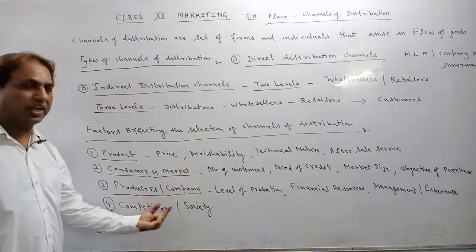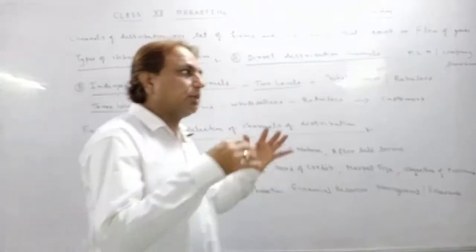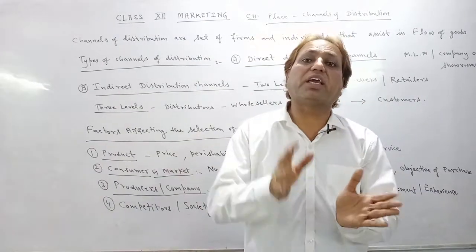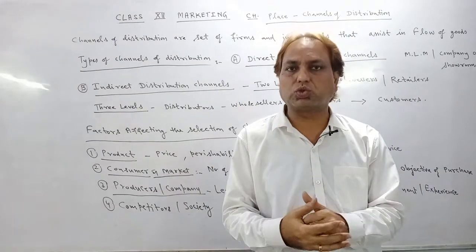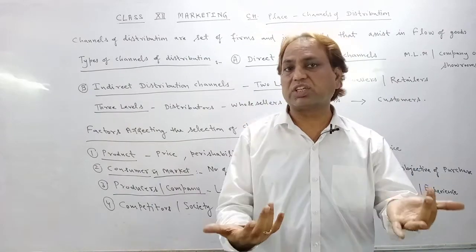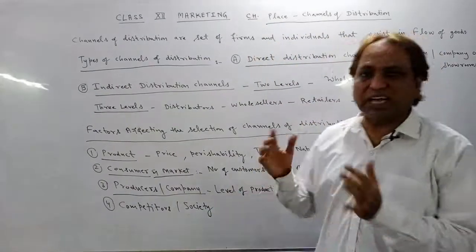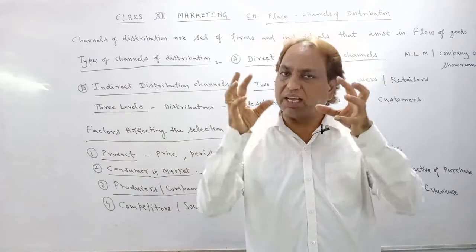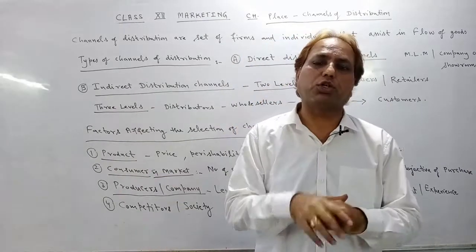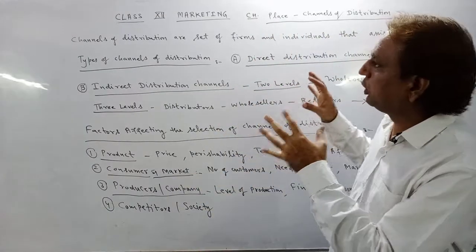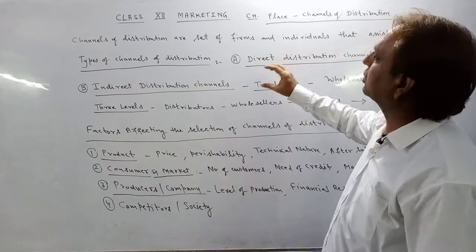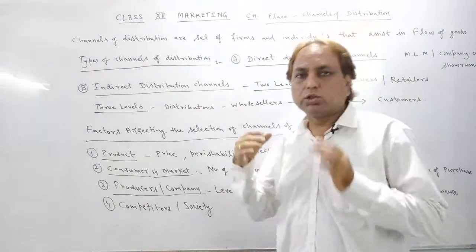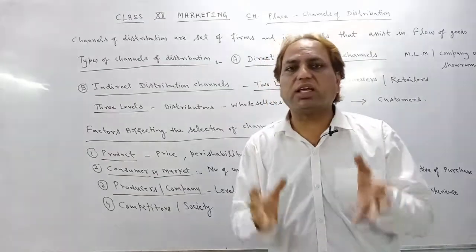The last factor is competitors and society. When selecting a channel of distribution, we observe which channel our competitors are using and align accordingly. We also consider which channel of distribution our society and consumers prefer, and select based on that.